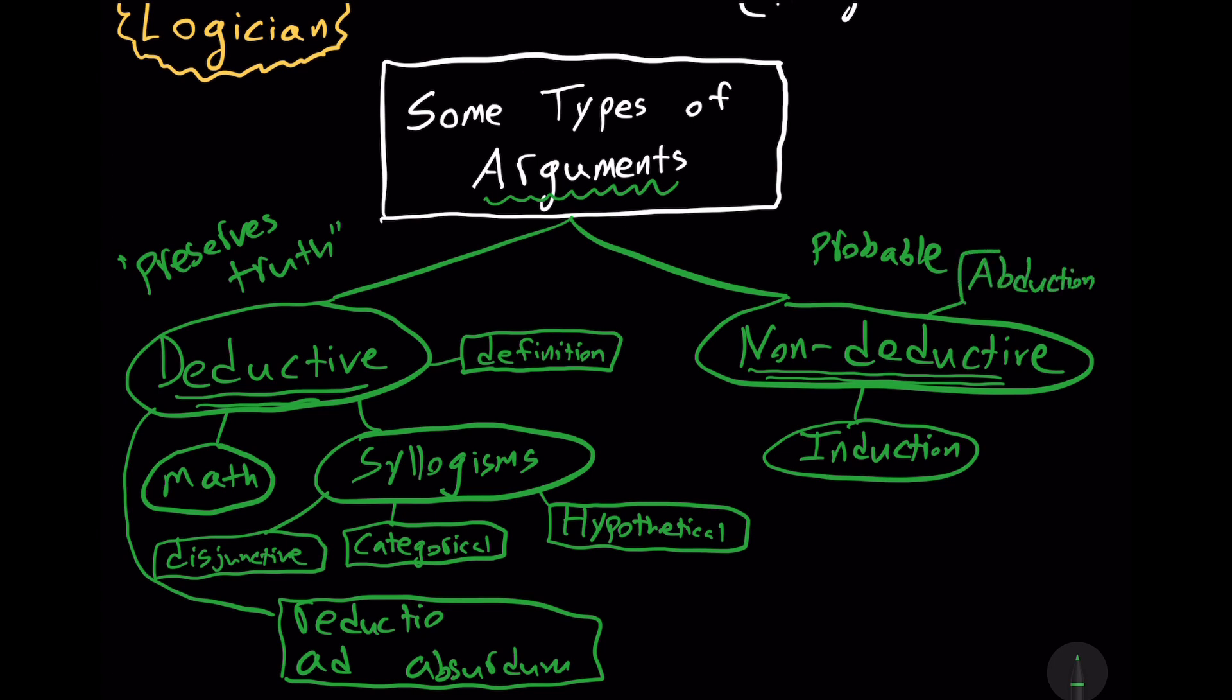And in an abduction argument, we're just making an inference to the best explanation. We're given a particular case, and then we're saying most likely the explanation is such and such. We don't have a generalization here. We're just dealing with one case and we're inferring what the best explanation is.